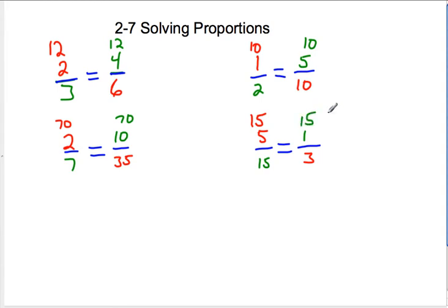As you can see, every time you have a proportion, the diagonals of the fractions on each side of the equation multiply to become the same number: twelve and twelve, ten and ten, seventy and seventy. These are called the means and extremes. The rule is this: